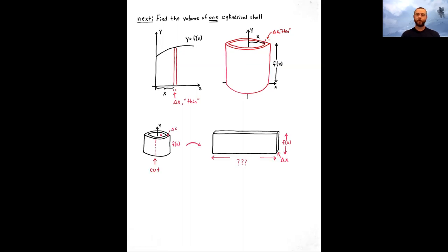The trick here is we're basically going to take one of these shells, cut it right up the middle, and unravel it. If we unravel that shell and stretch it out, it looks like a rectangle — really a rectangular box, since there is a very small depth in this orientation, the width of the shell, delta x. So it is three-dimensional and very thin. The height of this box is f of x, the width or depth is delta x. We have to determine the length.